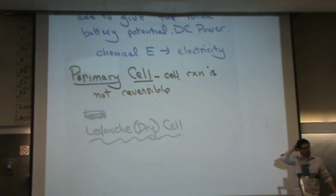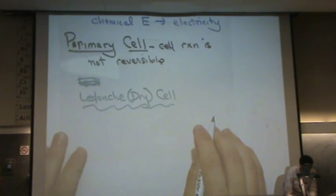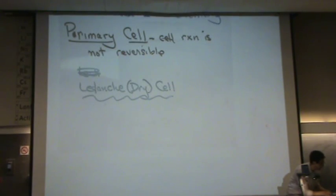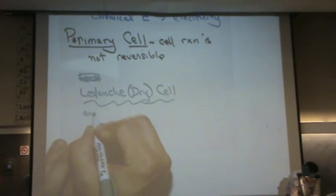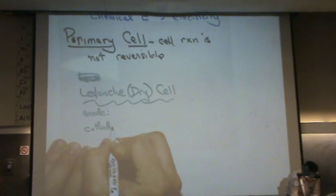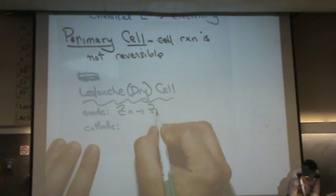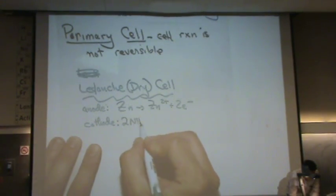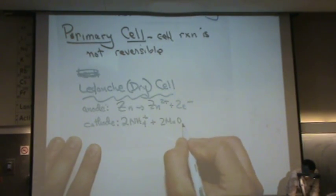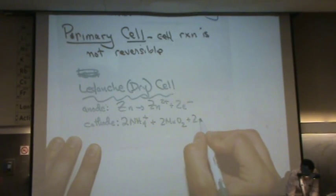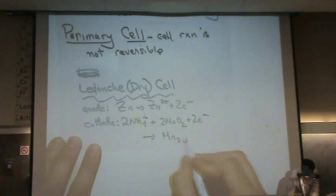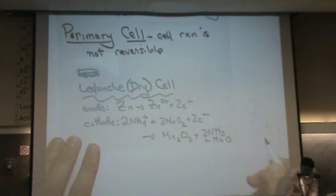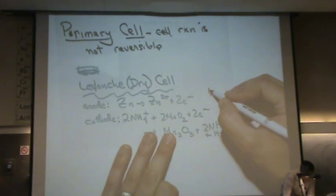This is your common AA, AAA, C battery, D battery, those sort of things. Let me write out the half reactions for you. You can take a look at these. They are somewhat complex. The anode and cathodes. So zinc goes, the first one's pretty simple. There's the anode. The cathode, plus two, manganese four oxide, plus two electrons, goes to Mn2O3, plus two ammonias, plus water. This is called the acid dry battery.